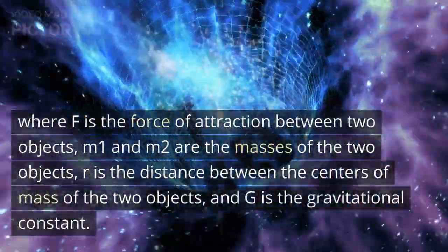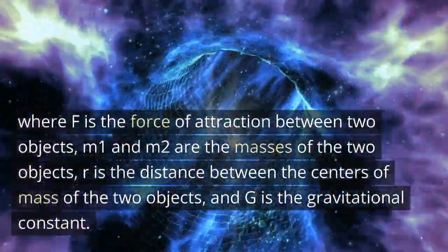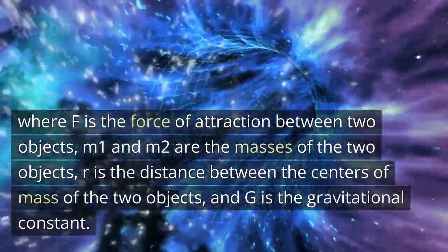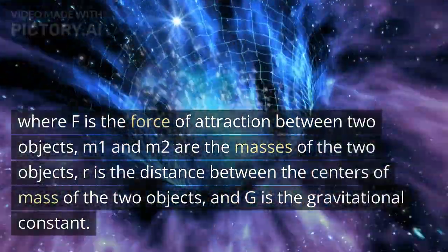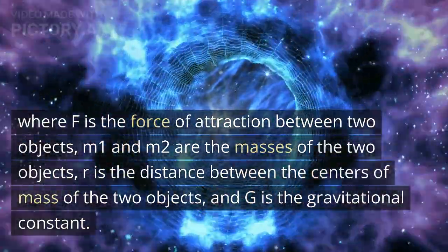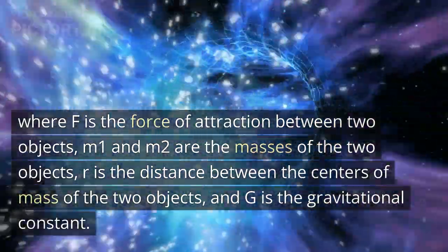Where F is the force of attraction between two objects, M1 and M2 are the masses of the two objects, R is the distance between the centers of mass of the two objects, and G is the gravitational constant.